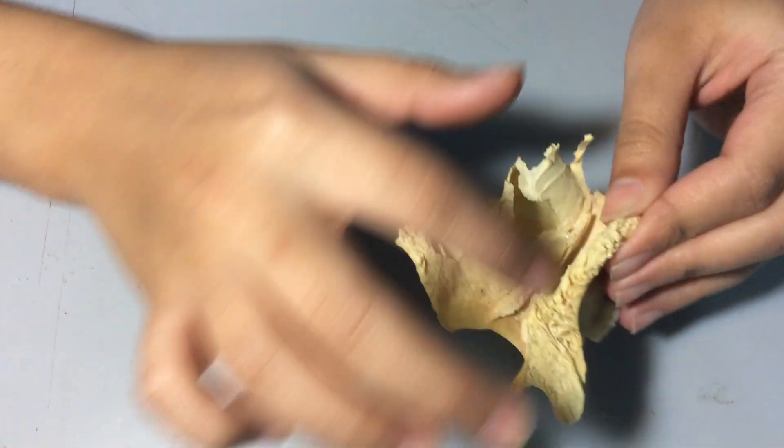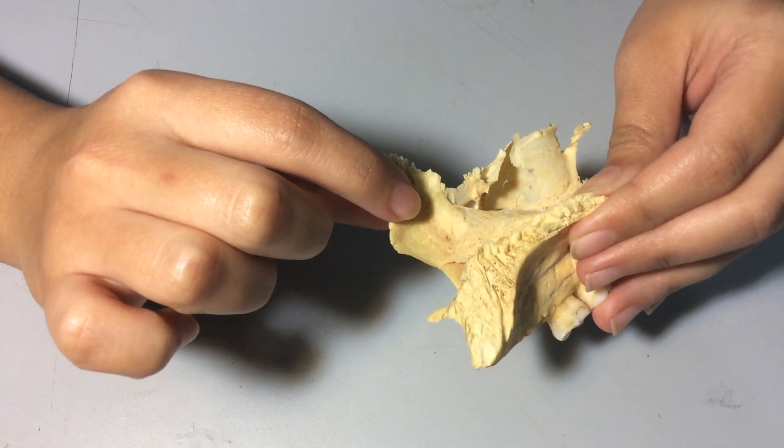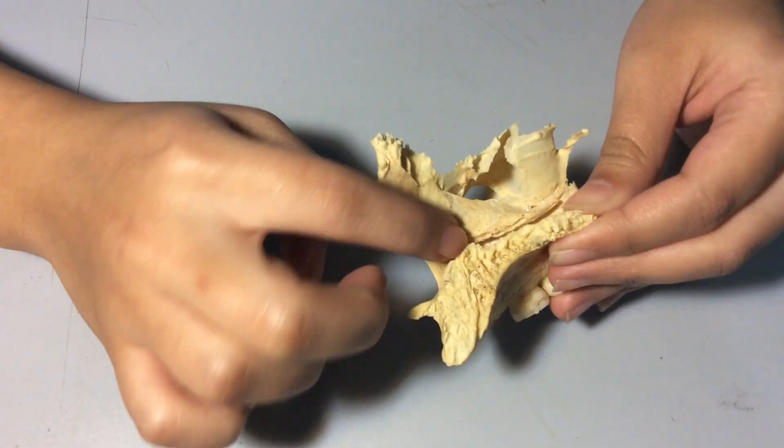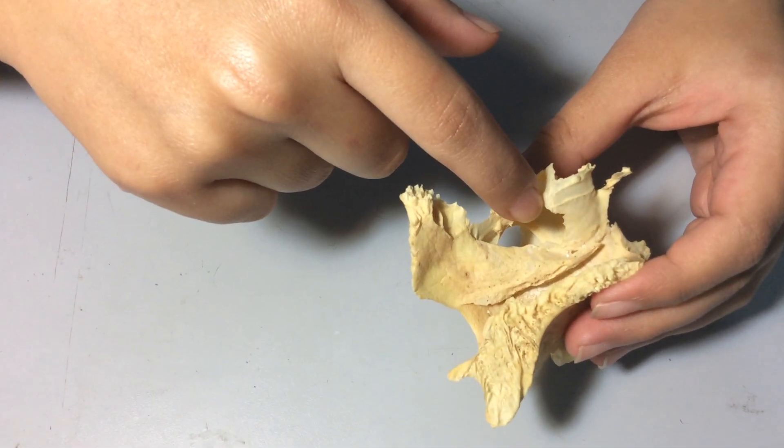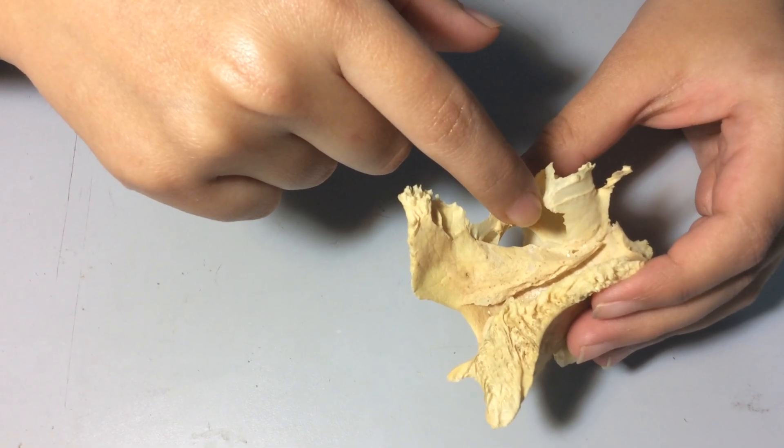On the mesial surface, we have the ethmoidal crest, conchal crest, and the inferior meatus. This is the maxillary hiatus which is the opening for the maxillary air sinus.